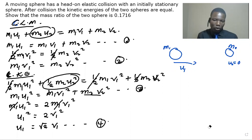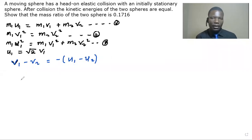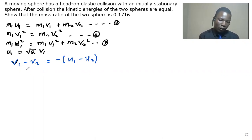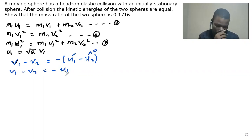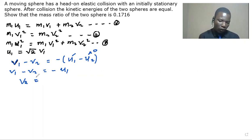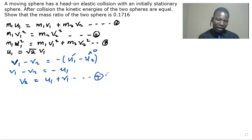We now bring in the coefficient of restitution. For an elastic collision, v1 - v2 = -(u1 - 0) = -u1. Rearranging, v2 = u1 + v1. Let this be equation 5.